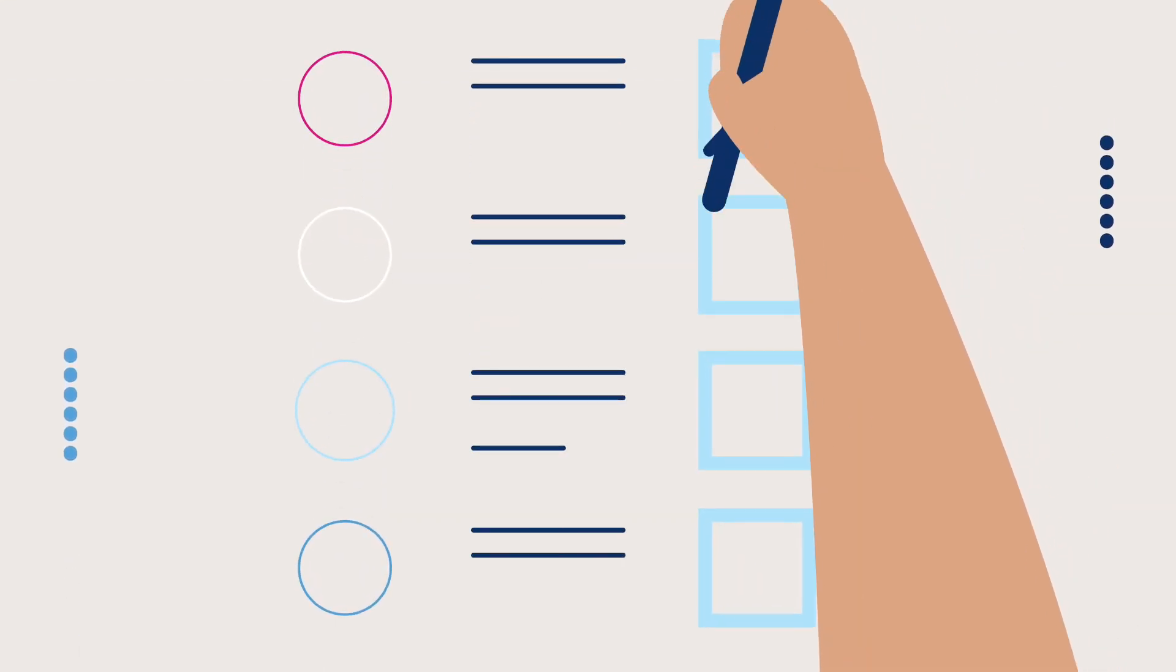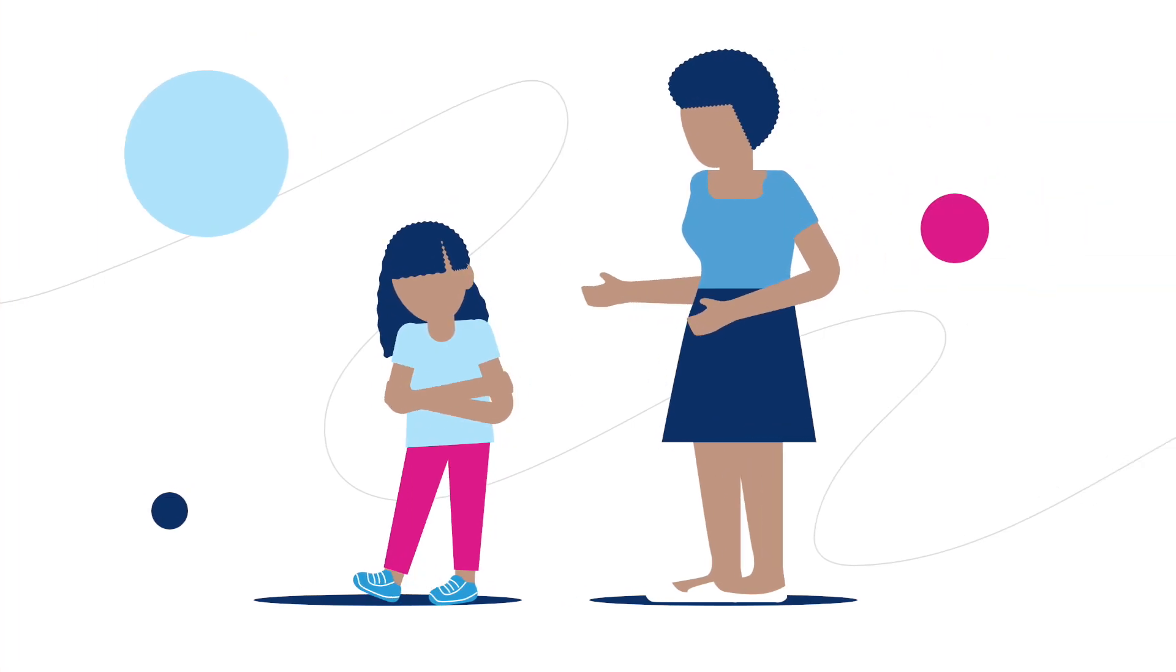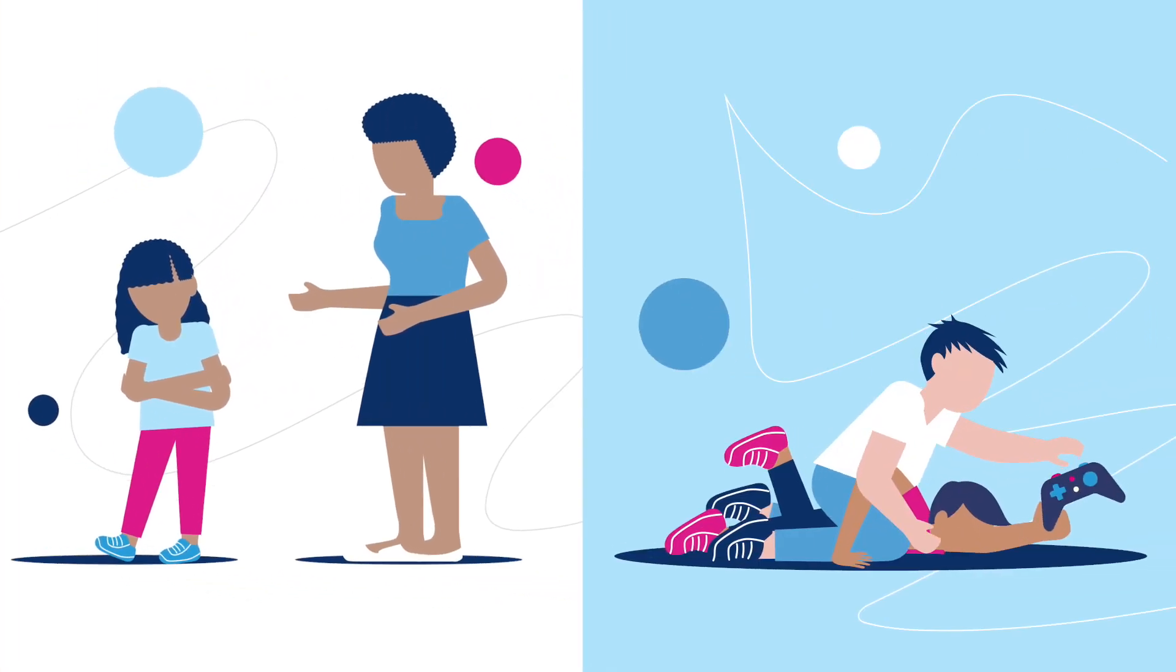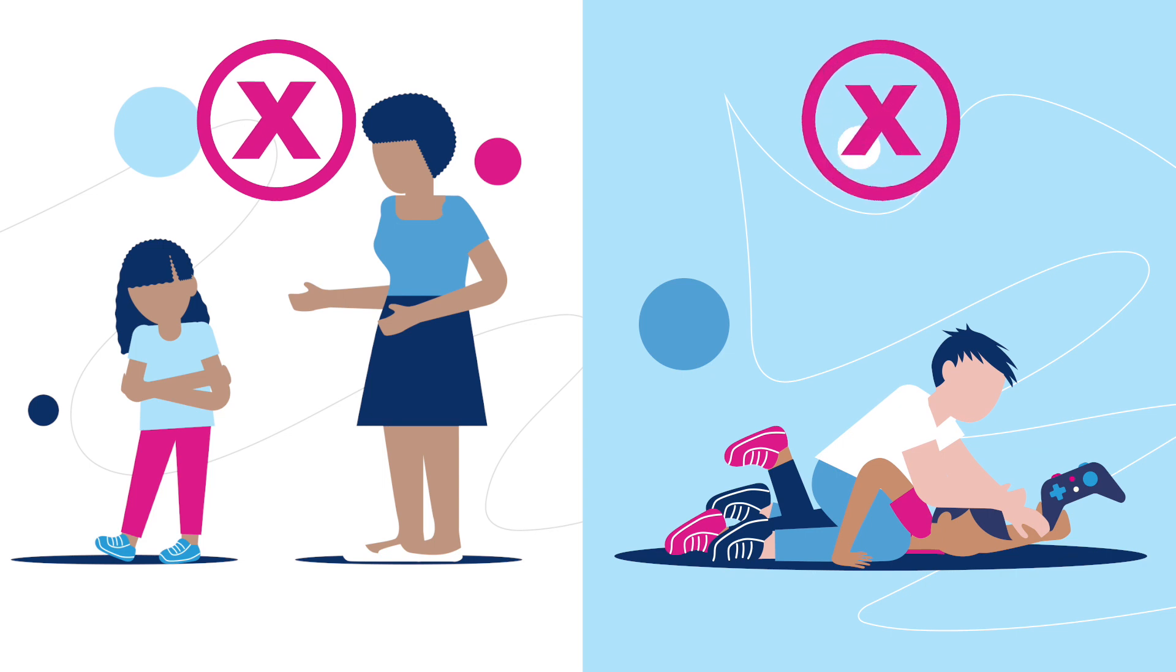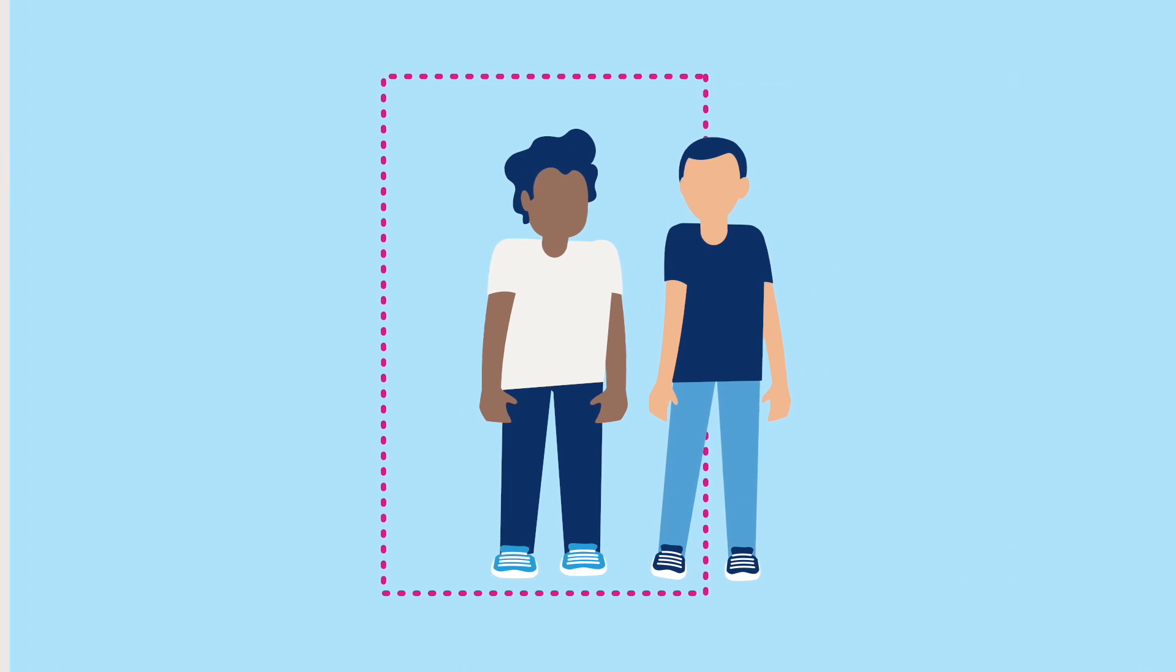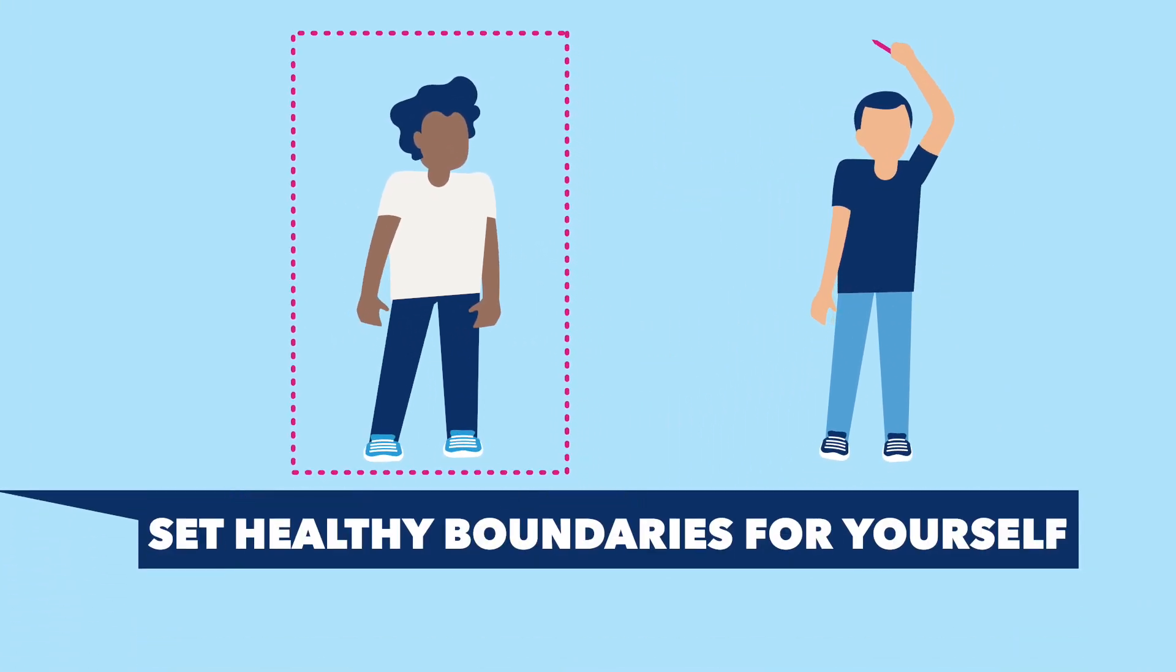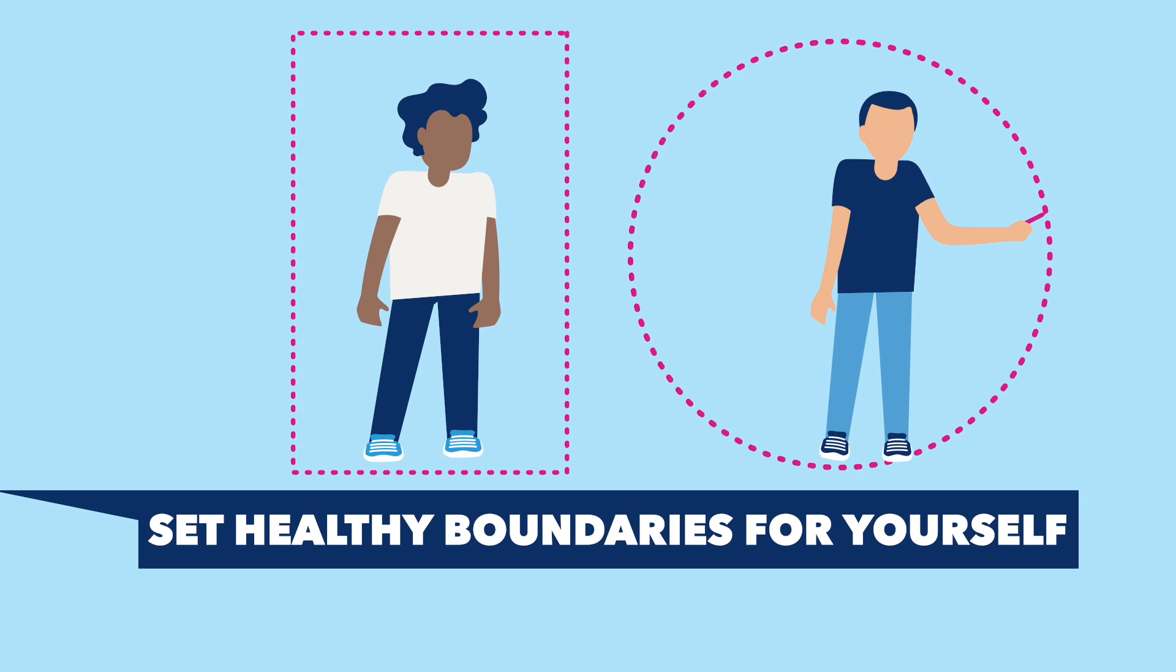And let them know that they get to decide who touches their body too. For example, if they don't want to hug auntie or have a tickle fight with their brother, they don't have to. These concepts are the building blocks of consent. Show your kid how you respect other people's boundaries and set healthy boundaries for yourself with people in your life.